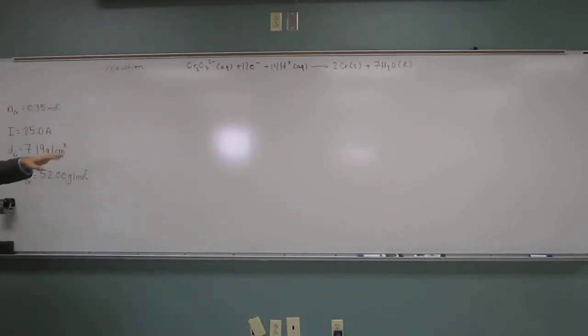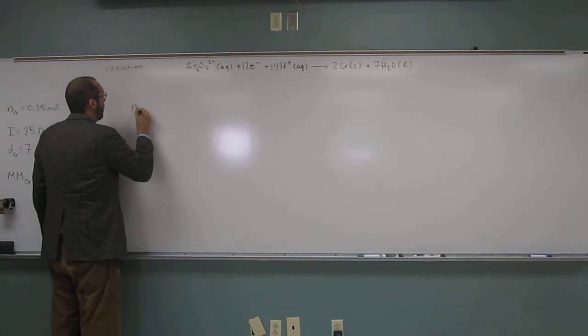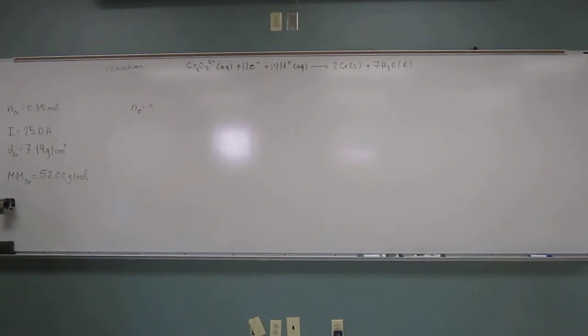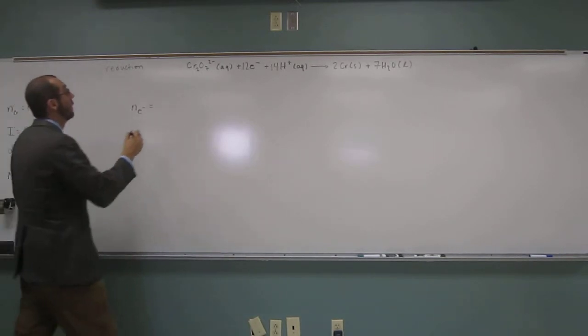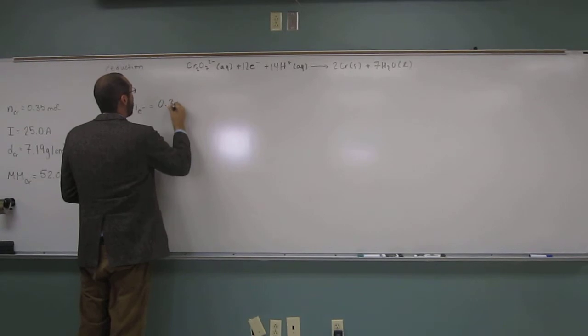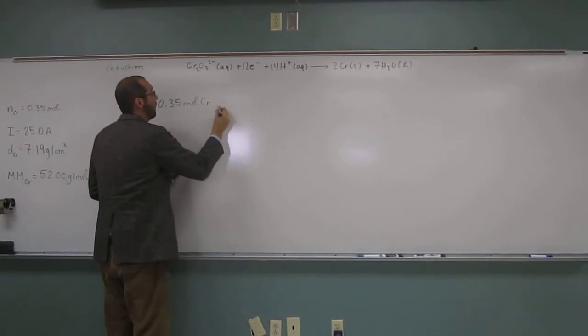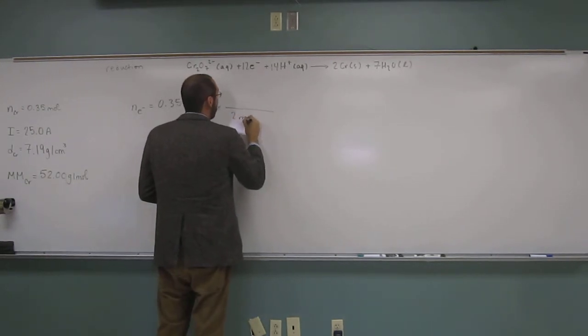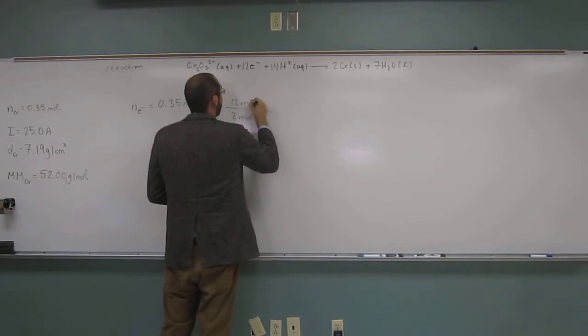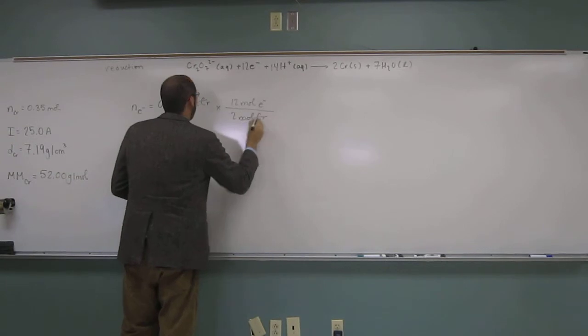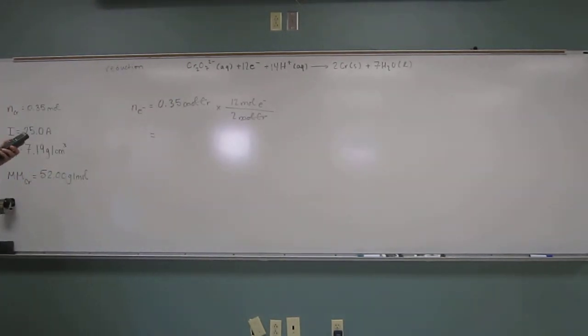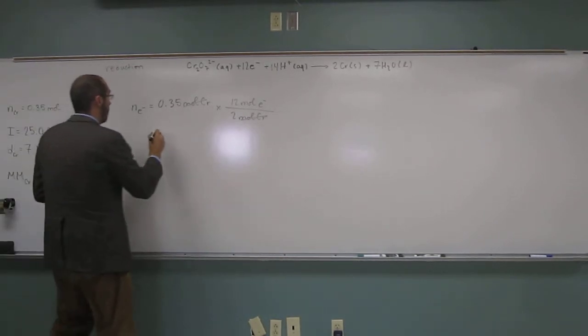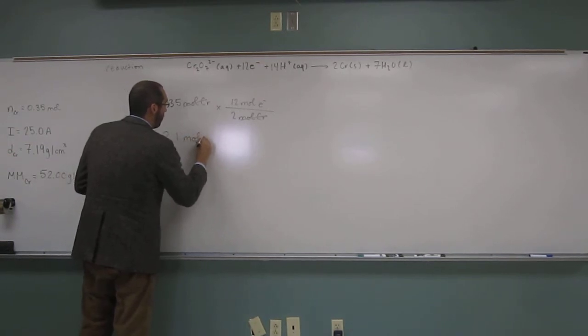So, we can now figure out, what is the number of moles of electrons that have been transferred when 0.35 moles of chromium get transferred? So, let's figure that out. The number of moles of electrons is going to be 0.35 moles chromium for every 2 moles chromium is 12 moles of electrons. So, 2.1 moles of electrons.